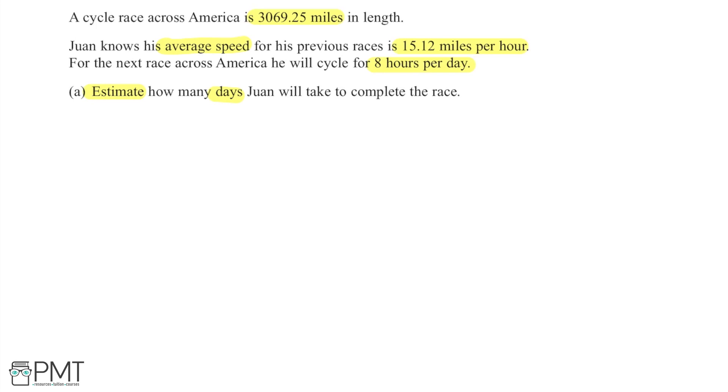To start, I'm going to round these values to sensible numbers that are easier to work with and provide a good estimate. If I take 3069.25 miles, a sensible estimate would be something to one or two significant figures, but because this number is so close to 3000, I'm just going to round it down to 3000 miles. It's a really nice whole number and will be easy to work with.